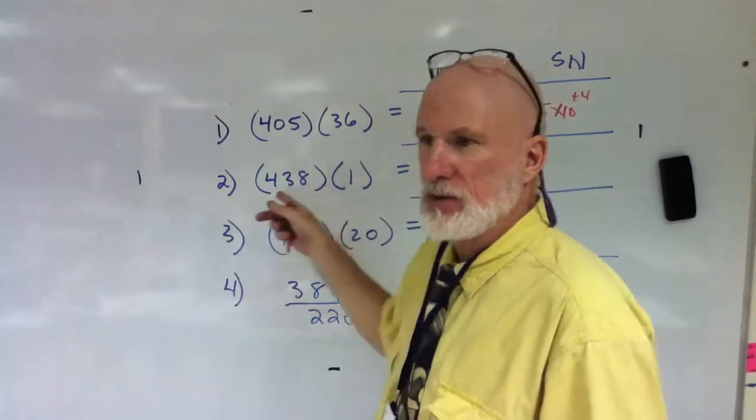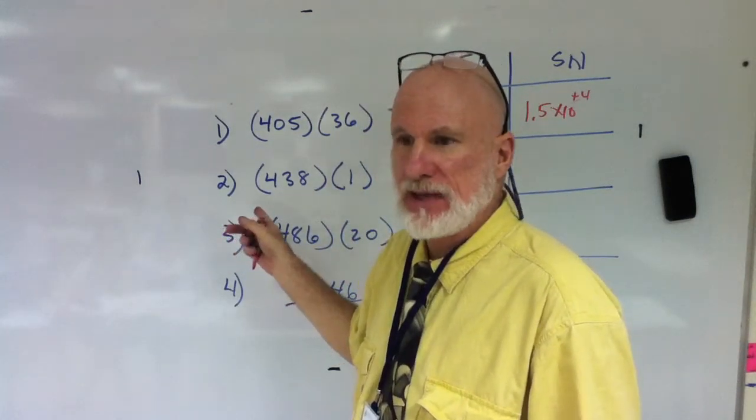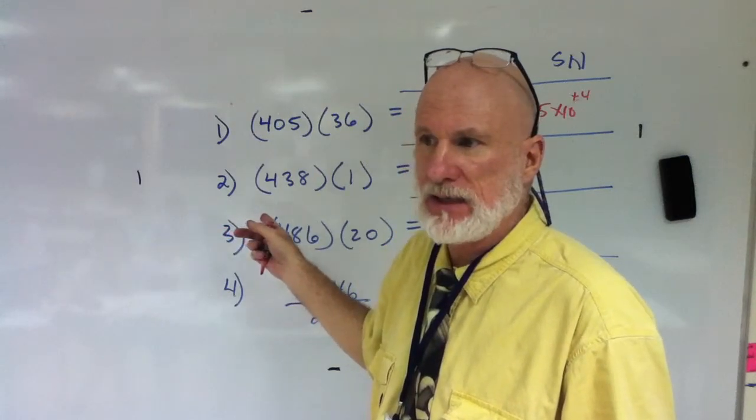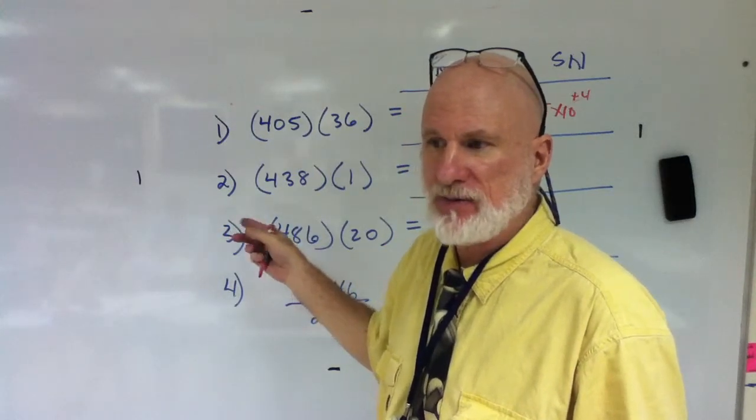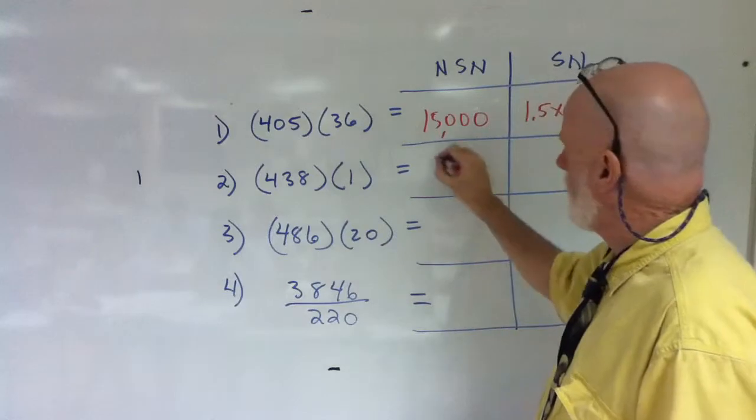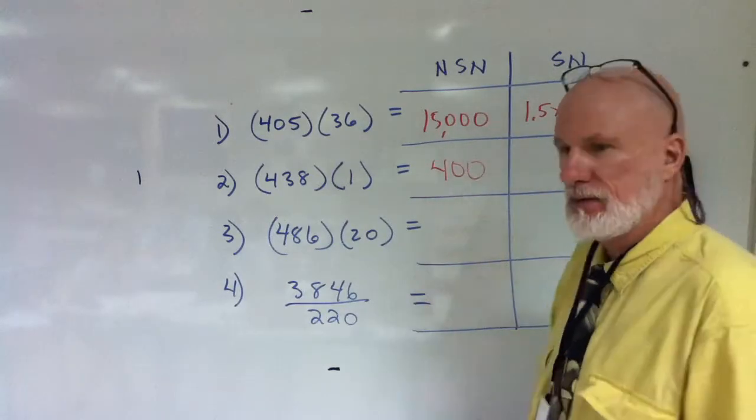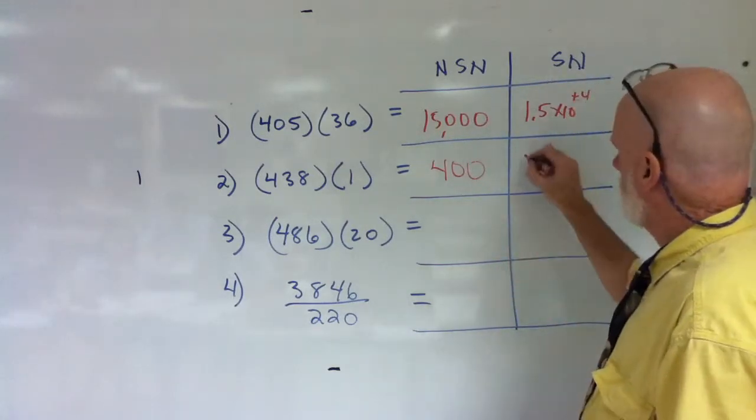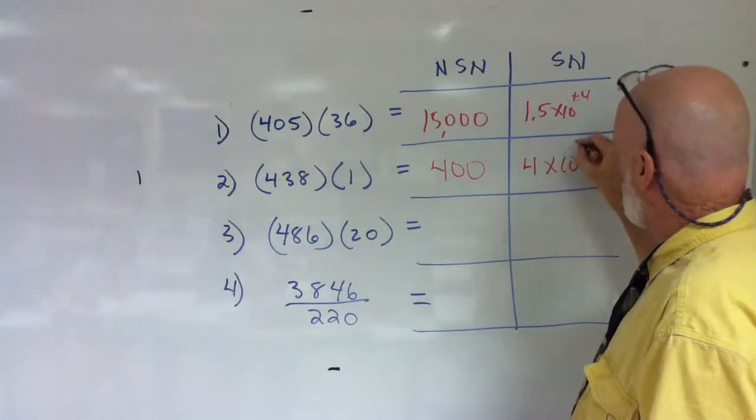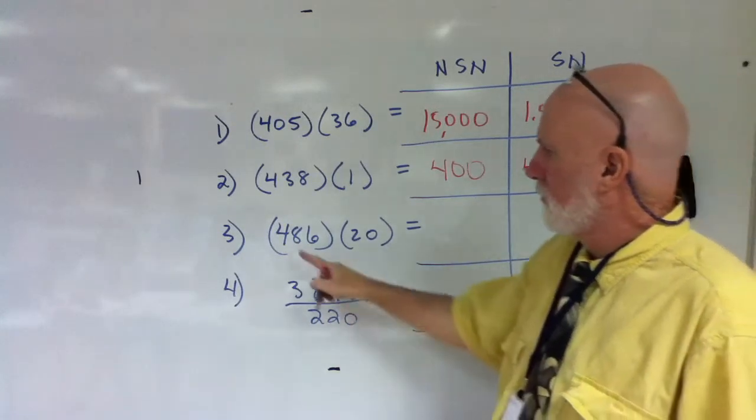One times 438, obviously that's 438 is the answer. But how many significant figures can you have? One. So it's gonna be 400, correct, or 4 times 10 to the 2.